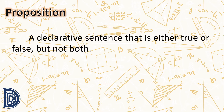Proposition: this is a declarative sentence that is either true or false but not both. In language, we learned about the four types of sentences according to function: imperative, interrogative, exclamatory, and declarative sentences. So we treat the declarative sentence with the same definition as in the proposition. For a sentence to be a proposition, it must be a declarative sentence, and in addition, it is either true or false but not both.